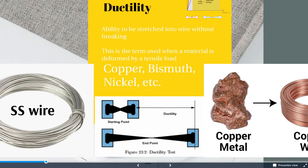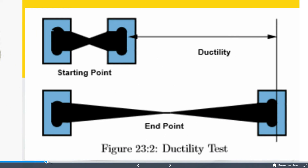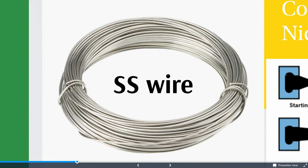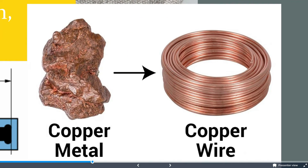This image shows a ductility test where the material is stretched between two jaws, and you will be able to determine how good the material is to be formed into a wire. In this stress-strain diagram you can see the difference between the ductile and brittle material. The brittle material tends to break at a certain point when stress is applied, but the ductile material tends to stretch for a long time, and the absorbed energy is determined by the area under the curve. This image shows stainless steel and copper material stretched into the form of wire.